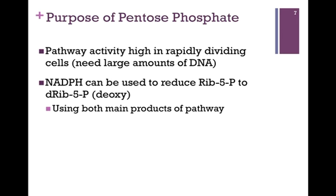The purpose of the pentose phosphate pathway is certainly to generate ribose 5-phosphate, and remember our second product is NADPH. The pathway activity is high in rapidly dividing cells because they need large amounts of DNA for the process of replication. We can also use the NADPH to reduce ribose 5-phosphate to deoxyribose 5-phosphate, and of course we need the deoxynucleotides to form DNA. So by this single pathway, we have the products we need to form all of our nucleotides, both for RNA and for DNA.